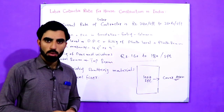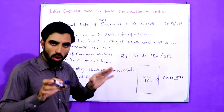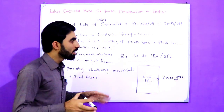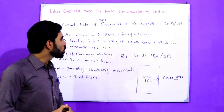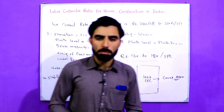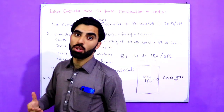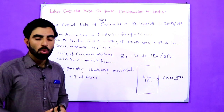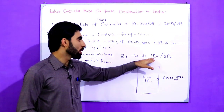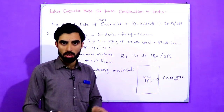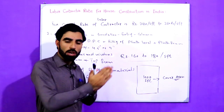The only work not included in this rate is electrical work — you will need to bring separate labor for electrical work. Apart from electrical, they will give you all facilities. You will not need to feed the laborers either — the contractor will bring their own food. If you select the lower rate of 160 to 180 rupees, they will not do plastering, floor construction, or staircase, and they will keep asking for extra money.